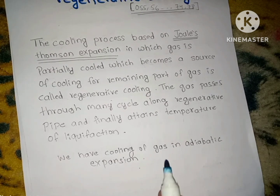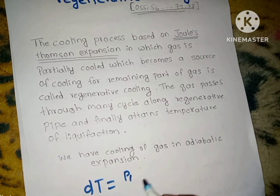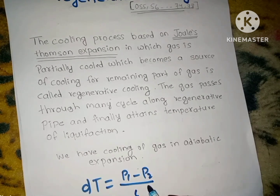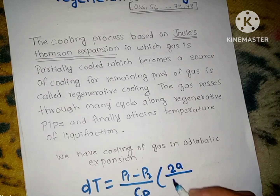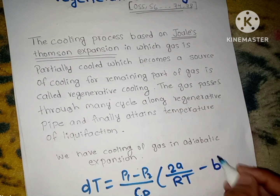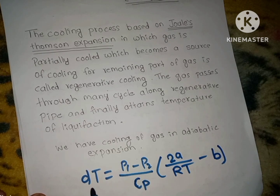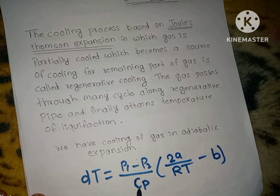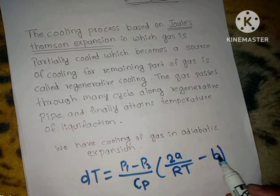The equation for cooling of gas in adiabatic expansion is: dT = (P1 - P2) / Cp × (2a/RT - b). Here, dT is the temperature difference, P1 minus P2 is the pressure difference, Cp is the specific heat capacity at constant pressure, a and b are Van der Waals constants, and T is temperature.